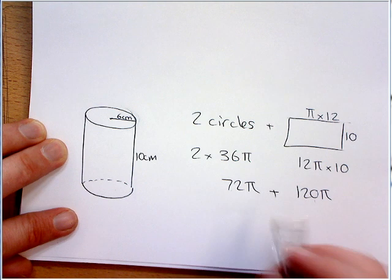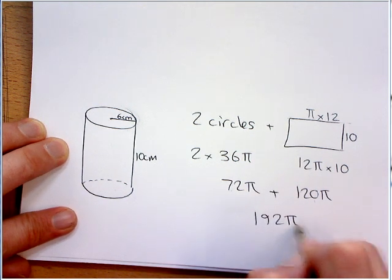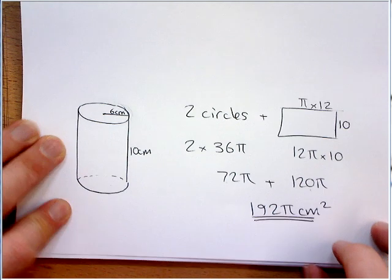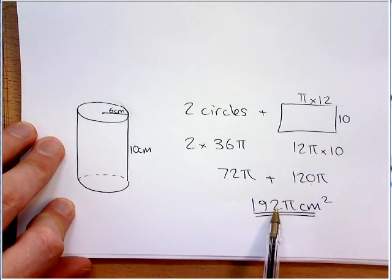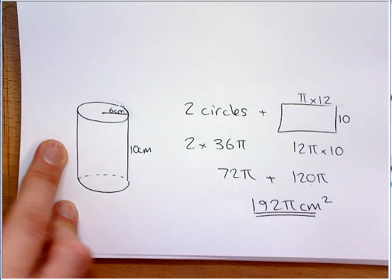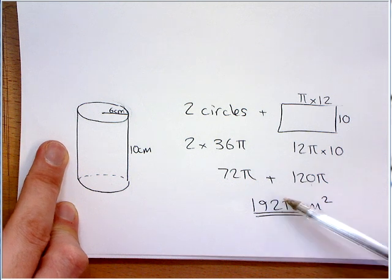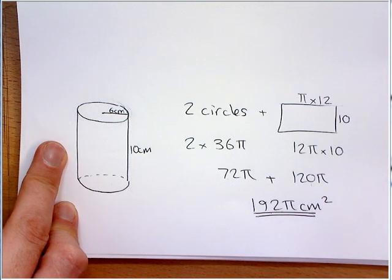Now, if we combine these two, we get 192 pi centimeters squared. So, I do often like leaving it in pi. I prefer it, because I don't need a calculator to do it. But if you did have it in a calculator question, you just press the pi button now, and you're done.